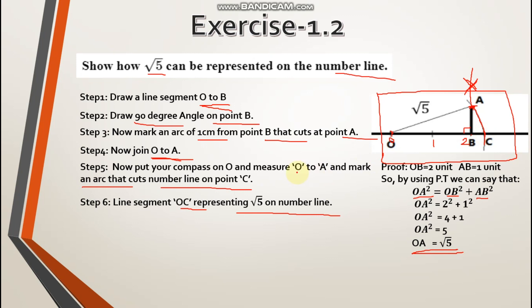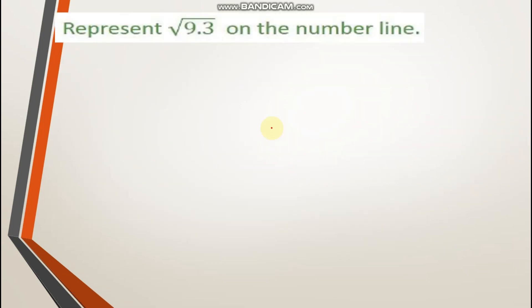Next, let's see the next question. Represent root 9.3 on number line. Now 9.3 you cannot use in Pythagoras theorem, because it is a decimal, it is not a whole number. So for this there is a second method.